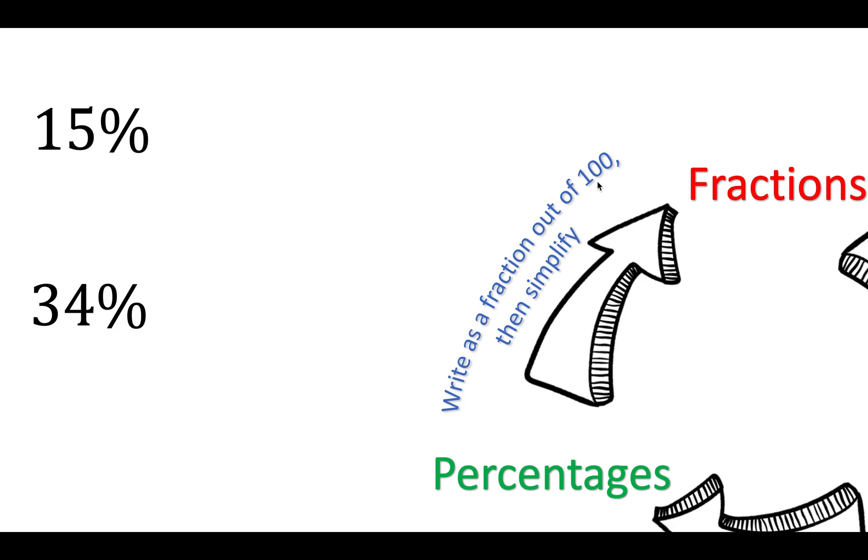Now, let's go from percentages to fractions. So we just write it as a fraction out of a hundred, like this: fifteen out of a hundred and thirty-four out of a hundred. That's what fifteen percent means—it means fifteen out of a hundred.